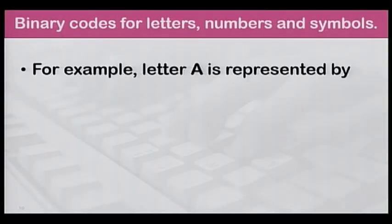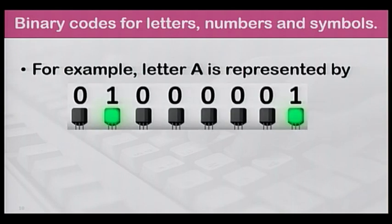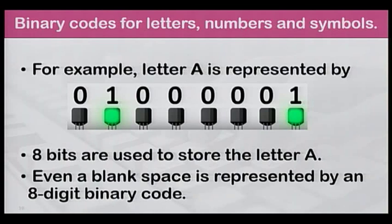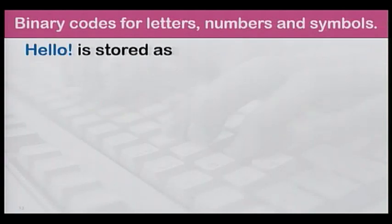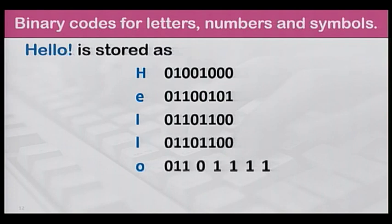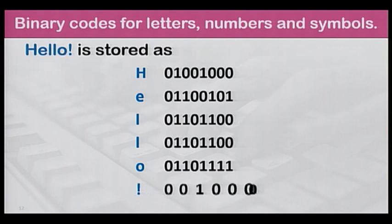You can see that each character is represented by an 8-bit binary code. For example, letter A is represented by 0, 1, 0, 0, 0, 0, 0, 1. Eight bits are used to store the letter A. Please note that even a blank space is represented by an 8-digit binary code. HELLO is stored as the following binary code. Please note that each character is represented by a group of 8 bits.